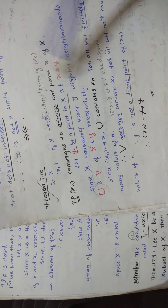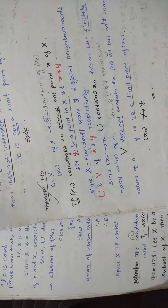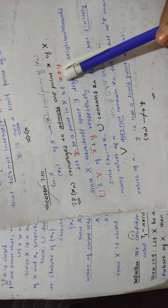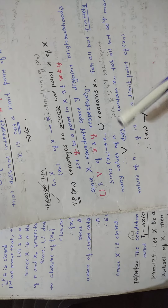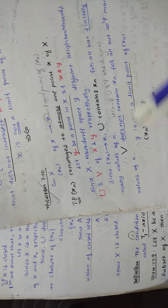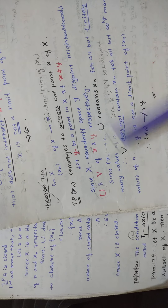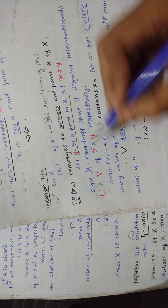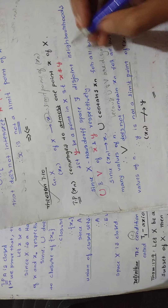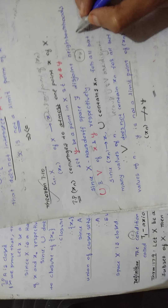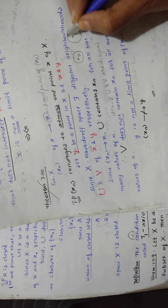You are taking a point y from X such that x ≠ y — they are different values, that is why we write x not equal to y. Since X is a Hausdorff space, by the definition of Hausdorff space, there exist disjoint neighborhoods for the points x and y. For x there is a neighborhood U, and for y there is a neighborhood V.